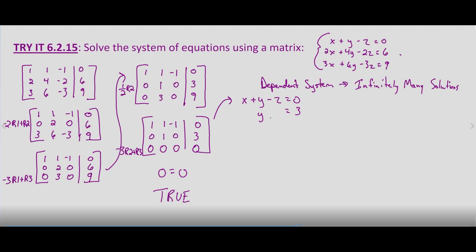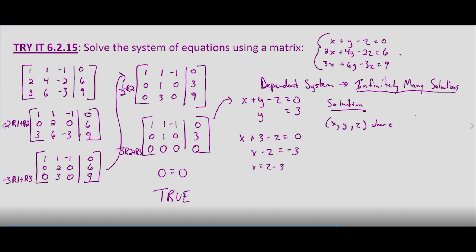Substituting y equals three into our first equation, we get x plus three minus z equals zero. Subtracting three from both sides gives x minus z equals negative three, and adding z to both sides gives x equals z minus three. So our most general solution, with infinitely many solutions, is: x equals z minus three, y equals three, and z equals any real number.